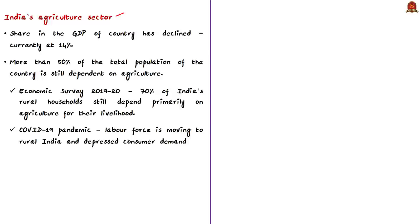The agriculture sector's share in GDP has declined and is currently at about 14%. However, more than 50% of the total population of the country is still dependent on the agriculture sector. According to the Economic Survey of 2019-20, about 70% of India's rural households are still dependent primarily on agriculture for their livelihood. But incomes in the agri sector have been stagnant over the last decade, and an average worker earns less than 60 to 70% of the income compared to their counterparts in urban areas.